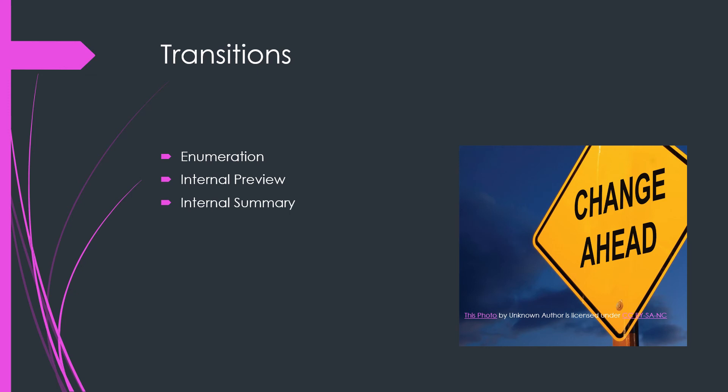We also have internal summaries. You might say: 'I talked to you about the physical benefits of practicing yoga; now I'm going to talk to you about the mental benefits.' You're providing a summary for your audience. And not in your textbook: you can also use quotes between main ideas as a transition. You can be as creative as you want, as long as you are thoughtful about how you transition from one idea to the next.